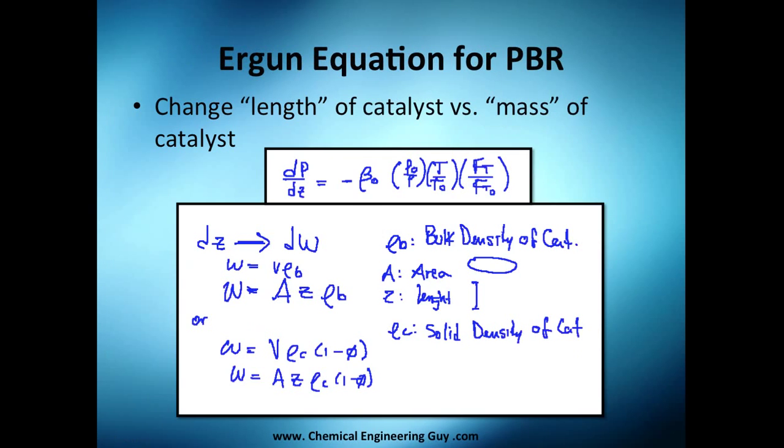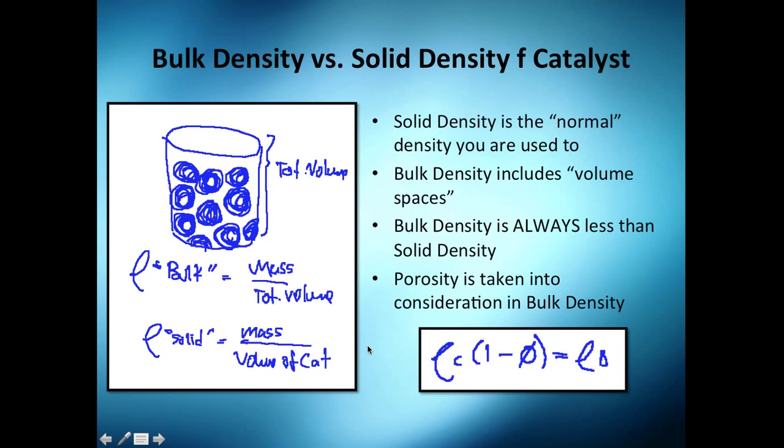At least if you want to use the common one, well you need to account for the blank spaces here. So the solid density is the one you're used to, the normal one, or the one you know. This is the total mass of that substance divided by the total volume occupied by that substance.